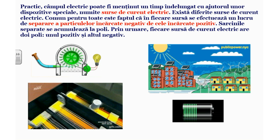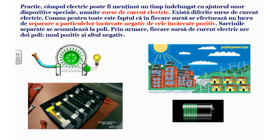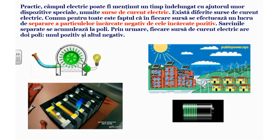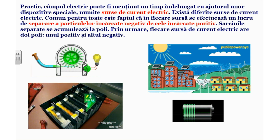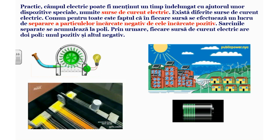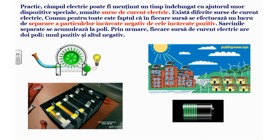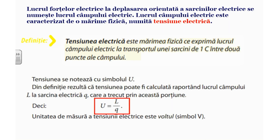Există diferite surse de curent electric. Comun pentru toate este faptul că în fiecare sursă se efectuează un lucru de separare a sarcinii. Sarcinile separate se acumulează la poli; prin normalitate fiecare sursă de curent electric are doi poli: unul pozitiv și unul negativ. În imagini aveți fotografii de surse de curent, cum ar fi baterie, panouri solare, generator. Deci sursele de curent, generând un câmp electric, care la rândul lui acționează cu o forță asupra particulelor încărcate, punându-le în mișcare dirijată, efectuează un lucru.